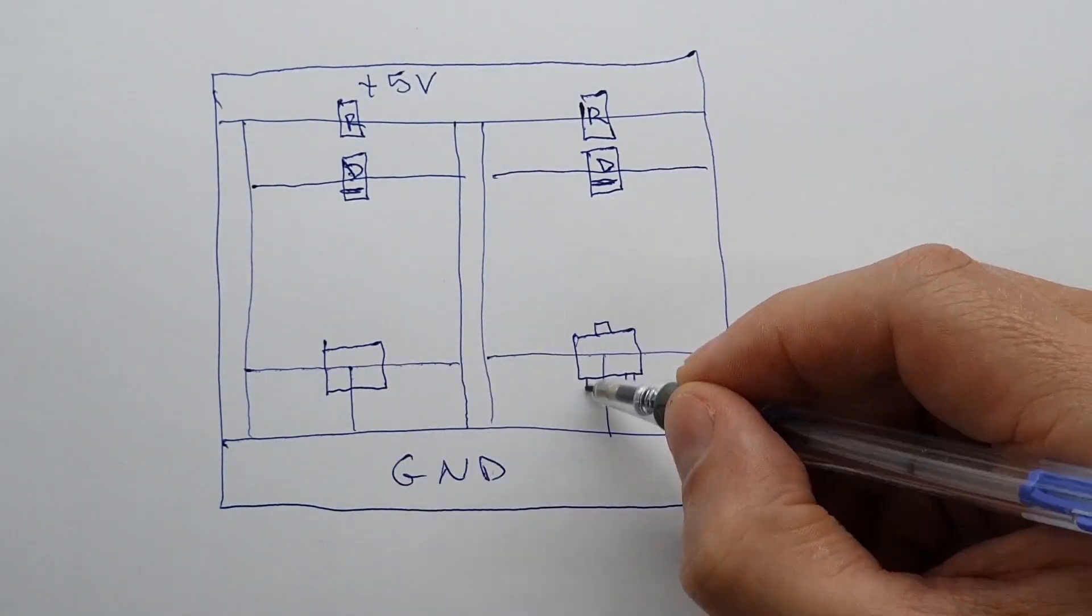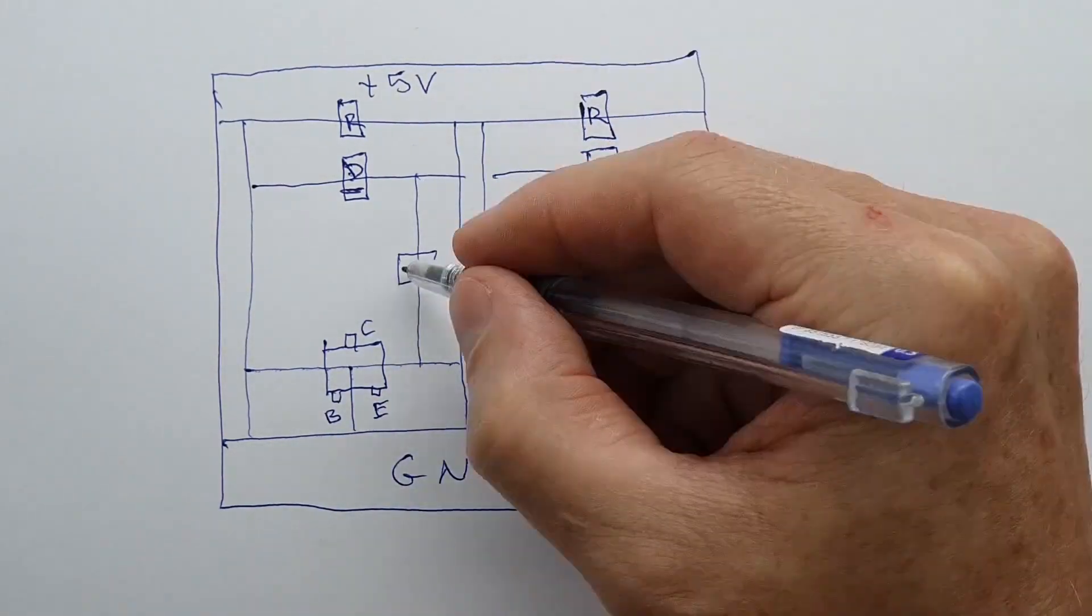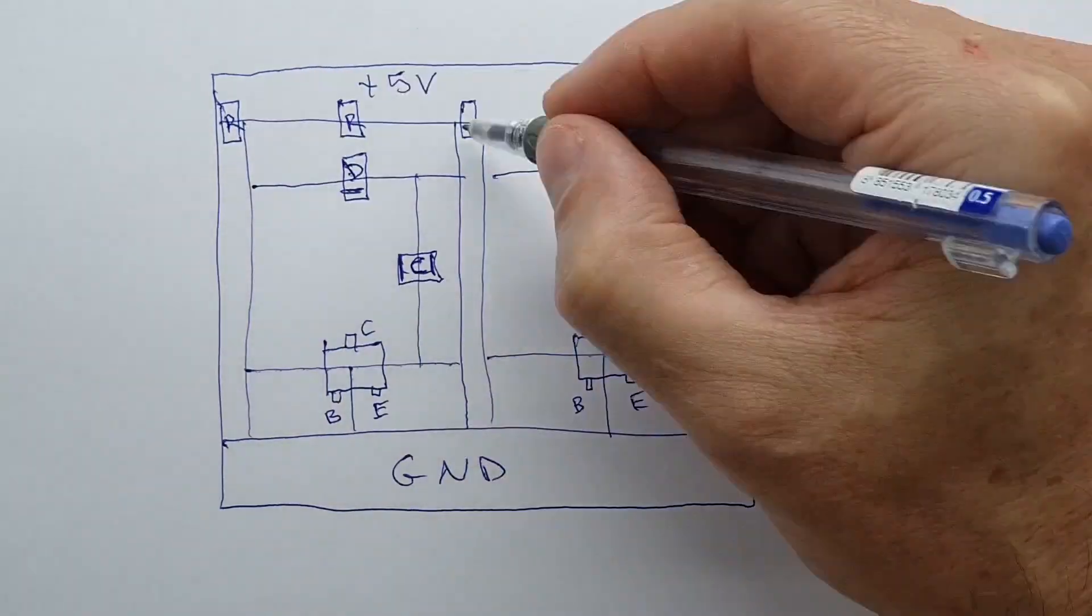For circuit nodes that require jumpers, leave enough room to comfortably solder a jumper. Don't leave any floating nodes. Connect any large unused copper areas to ground.